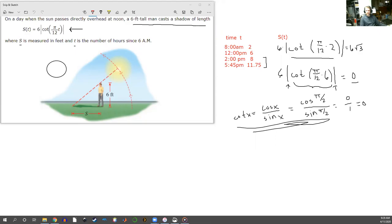From part C, it asks: determine the values of T at which the length of the shadow equals the man's height. To what time of day does each of these values correspond? So what we've got here is we want to make sure that S of some time—and we don't know that time—is equal to his height, that's equal to six feet. Now we know that this is calculated this way: we take six times the absolute value of the cotangent of π over 12 times T, the hours since 6 a.m.